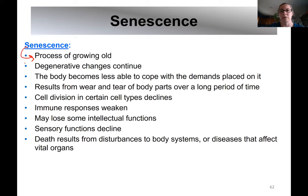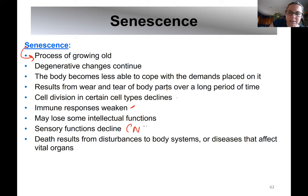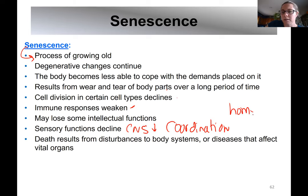Intellectual and sensory functions decline; the central nervous system starts to decline; coordination starts to decline and you may become more clumsy. The body's ability to maintain homeostasis may decline — it's not uncommon for older people to be cold and wear sweaters even when it's 72 degrees in a room. Death usually occurs when there's a severe disturbance to a body system or disease that affects the vital organs.